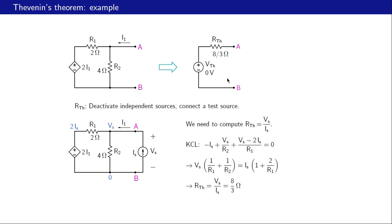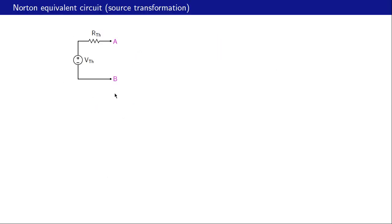Since v-th is zero volts we may as well replace the voltage source with a short circuit. Therefore all we have between a and b is the resistance r-th equal to eight-thirds ohms. This simple circuit is equivalent to the original circuit with the dependent source.